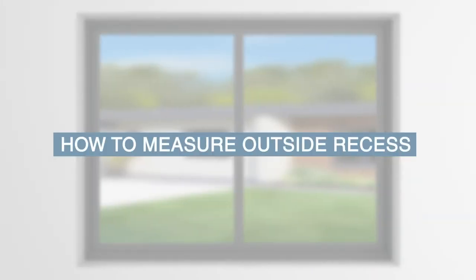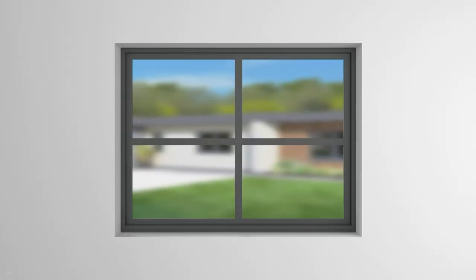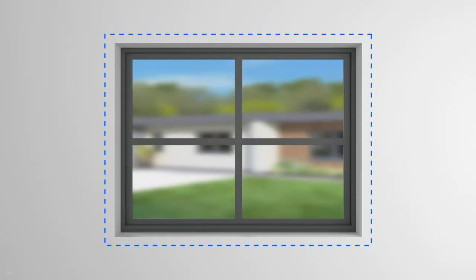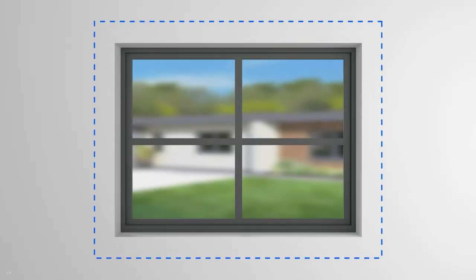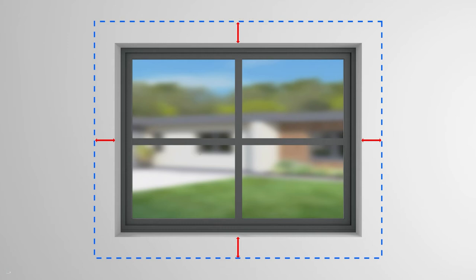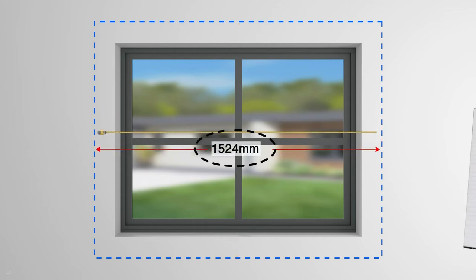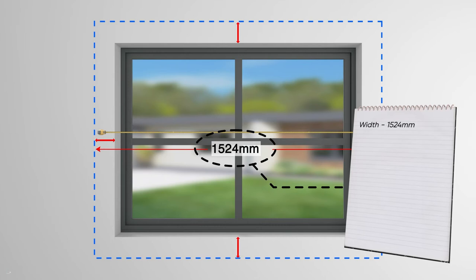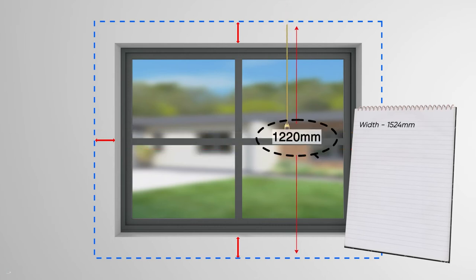Here's how you measure the outside recess. First, figure out the area you want the blind to cover. To minimise light leakage, we recommend that the blind should overlap the window by at least 75mm around each edge. Once you've decided, it's time to measure. Start off by marking this area on all edges and measure the width from the outermost points you've marked. Now measure down to get the height measurement — and that's it!